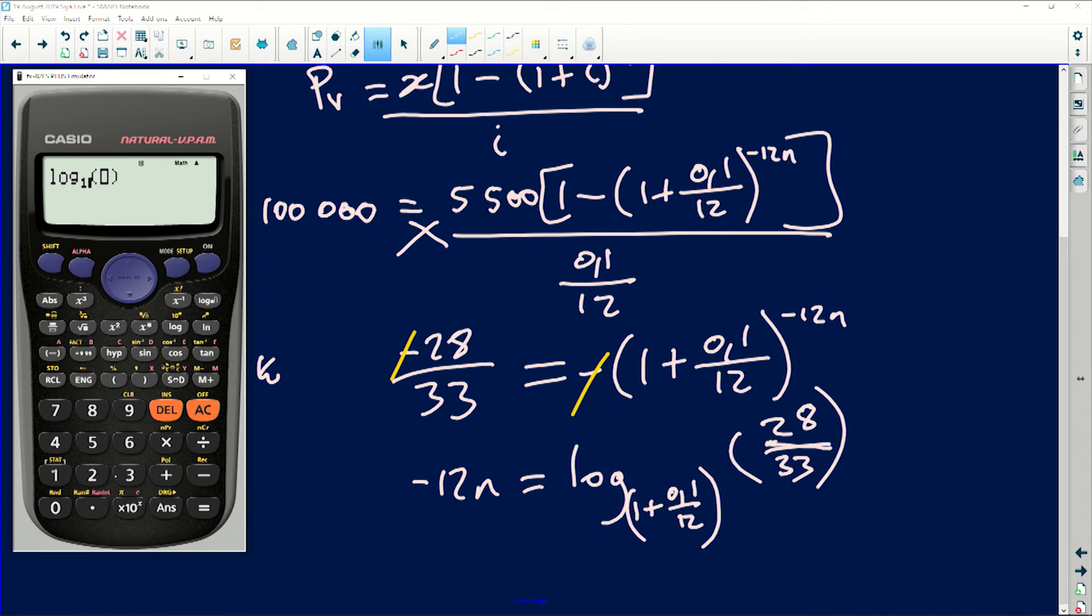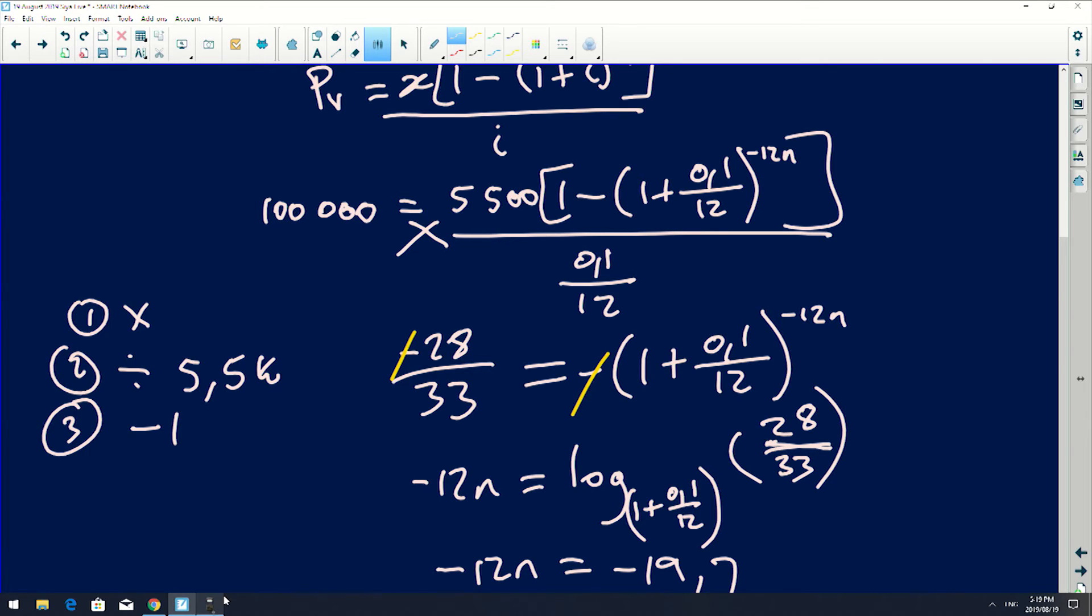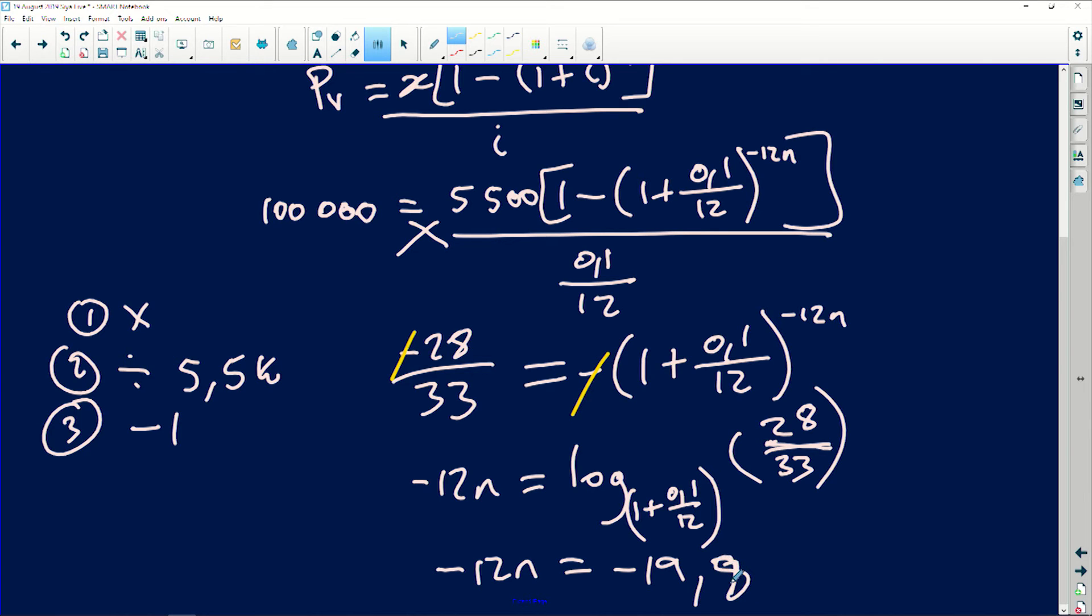So I have a log of 1 plus 0.1 divided by 12. And then this will be 28 divided by 33. And this will be equals to that. So it will be negative 19 comma something. So it's negative 12n is equals to negative 19.7, I think, 7, 9. So it's 8 in simple terms.